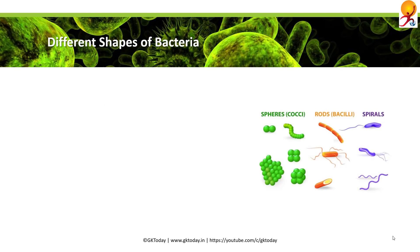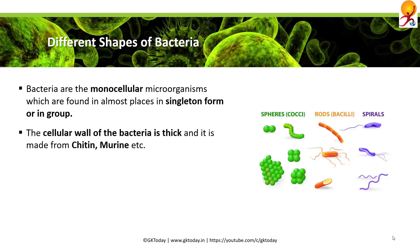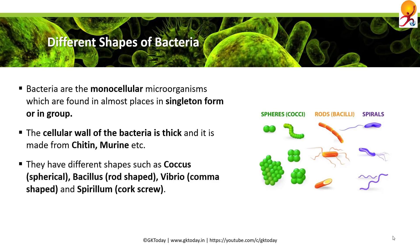What are the different shapes of bacteria? Bacteria are monocellular microorganisms found almost in all places, in either singleton form or in groups. The cellular wall is usually thick and is made from chitin and murine. Different shapes include coccus, which is spherical; bacillus, which is rod-shaped; vibrio, which is comma-shaped; and spirillum, which is corkscrew-shaped.